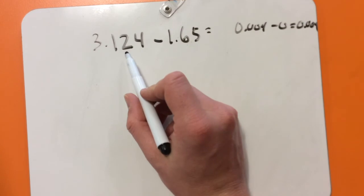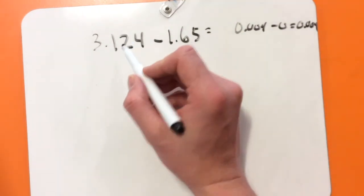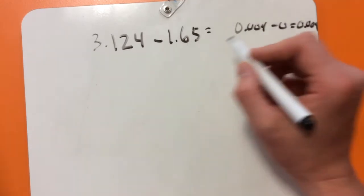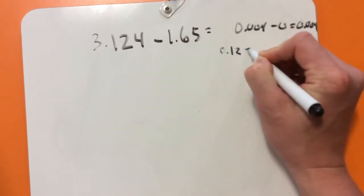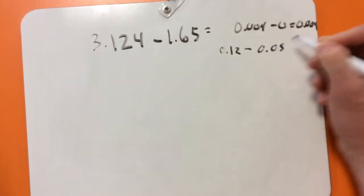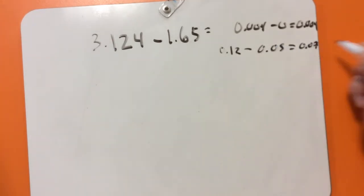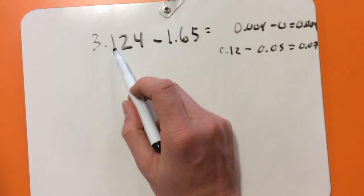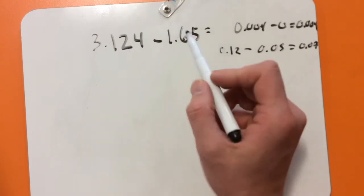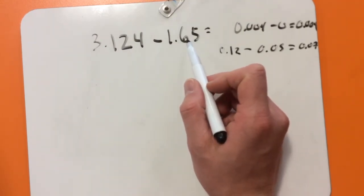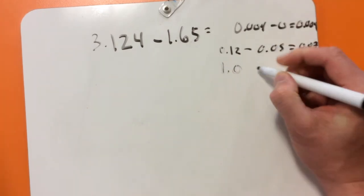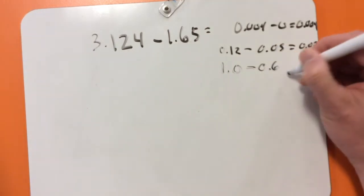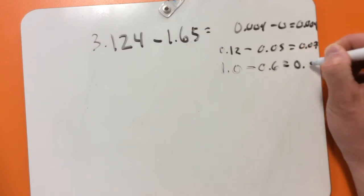Next thing I'm going to do is 2 tenths, take away 5 tenths. Can't do that. So I'm going to borrow 1 tenths. So it's going to be 0.12, take away 0.05, which is 0.07. Then since I've used that, I can't take away my 6 tenths. So I'm going to need to borrow 1. So that'll be 1.0, take away 0.6, and that equals 0.4.